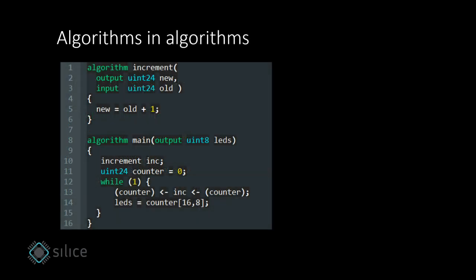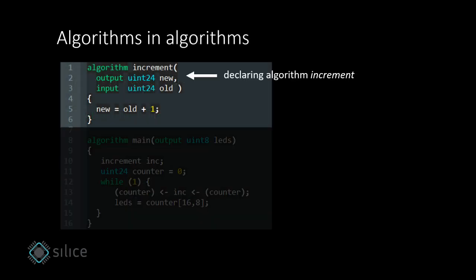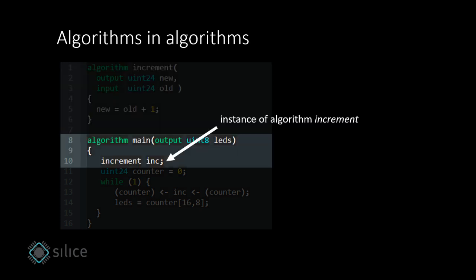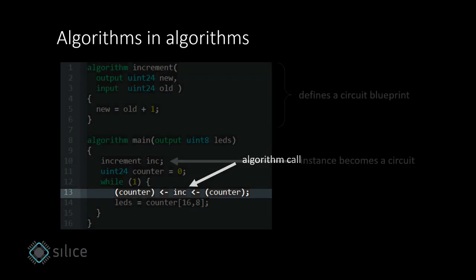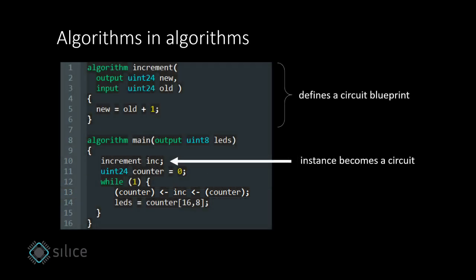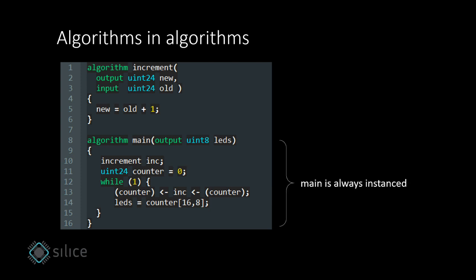We can also declare other algorithms. Here we define the increment algorithm. We then instantiate the algorithm in main. We can then call the algorithm with a list of inputs and outputs. This here is a synchronized call, which blocks until the called algorithm is done. So an algorithm declaration defines a blueprint that we then instantiate in other algorithms. Each instance becomes an independent circuit. Main does not need to be instanced, this is done automatically.